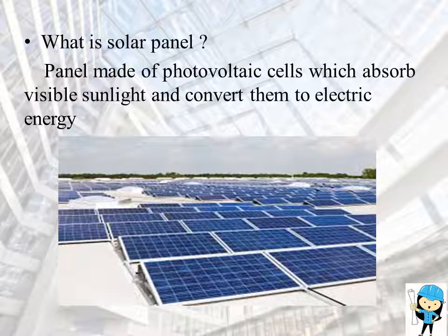Before going into the topic of transparent solar panels, we shall recall what is a solar panel. A solar panel is a panel made up of photovoltaic cells which absorb visible sunlight and convert them into electric energy. What is a photovoltaic cell? It is a semiconductor diode, or it can be simply explained as an electrical device that converts the energy of light directly into electricity by the photovoltaic effect.